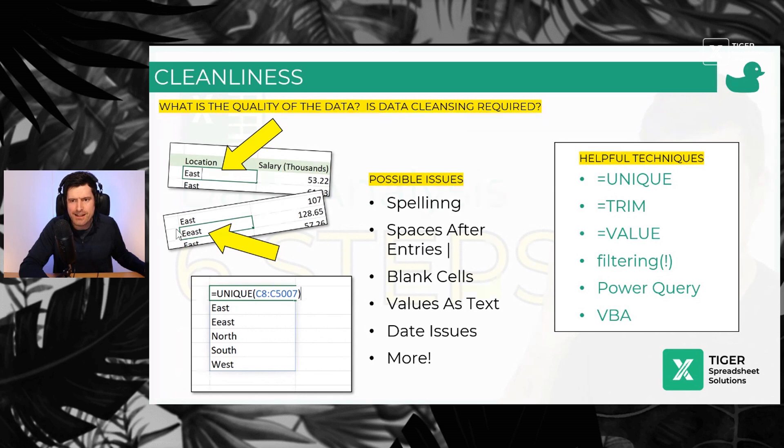It's things like spelling. It's the classic impossible to tell thing, which is if you have a space after an entry, that's an example of a data quality issue. So how can we clean up the data?